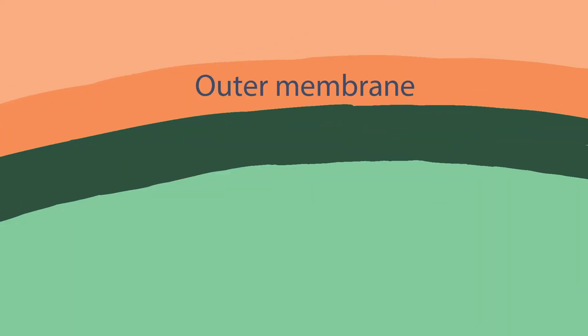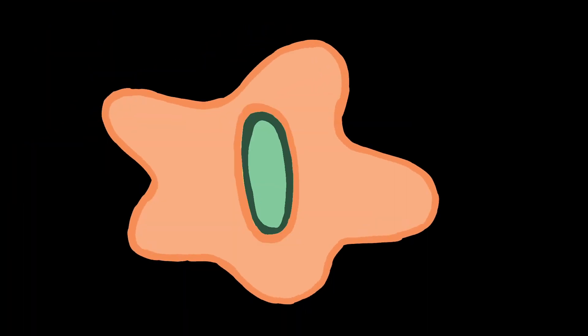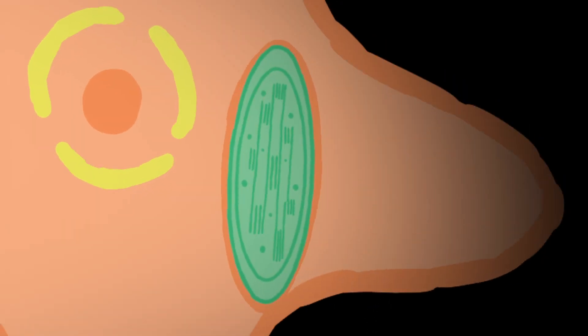Because their outer membrane used to belong to the blob cell. When they were engulfed in the endosymbiosis process, they got wrapped up in that membrane and kept their own as their inner one.